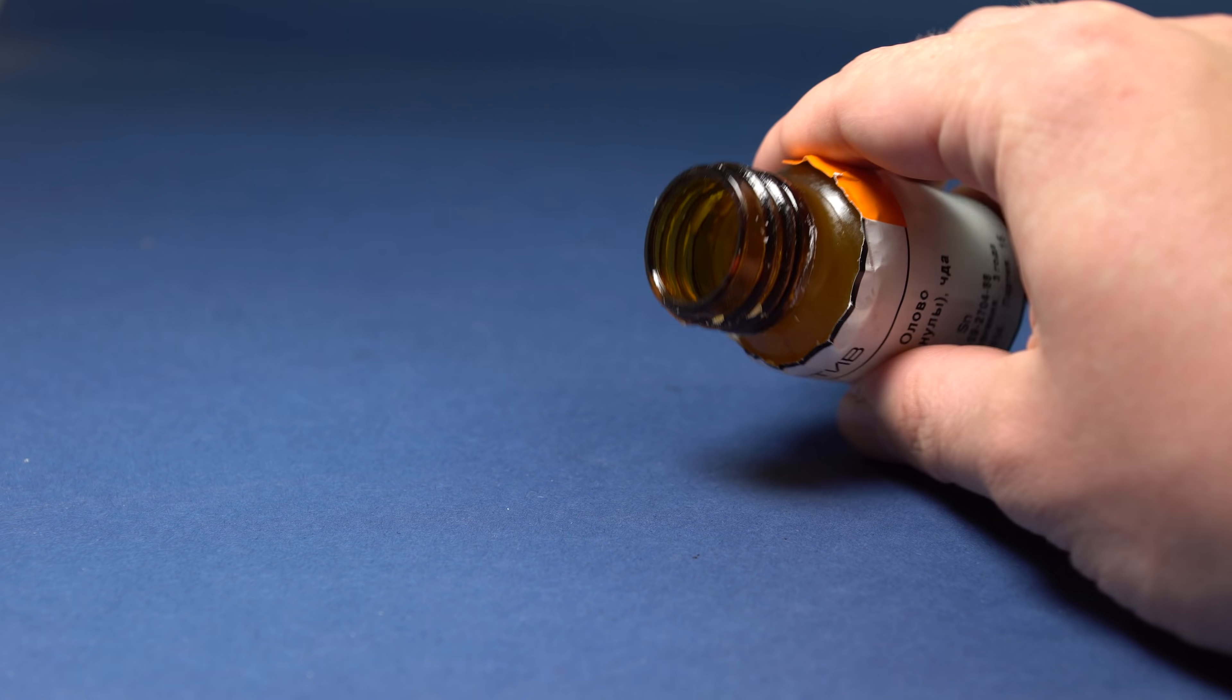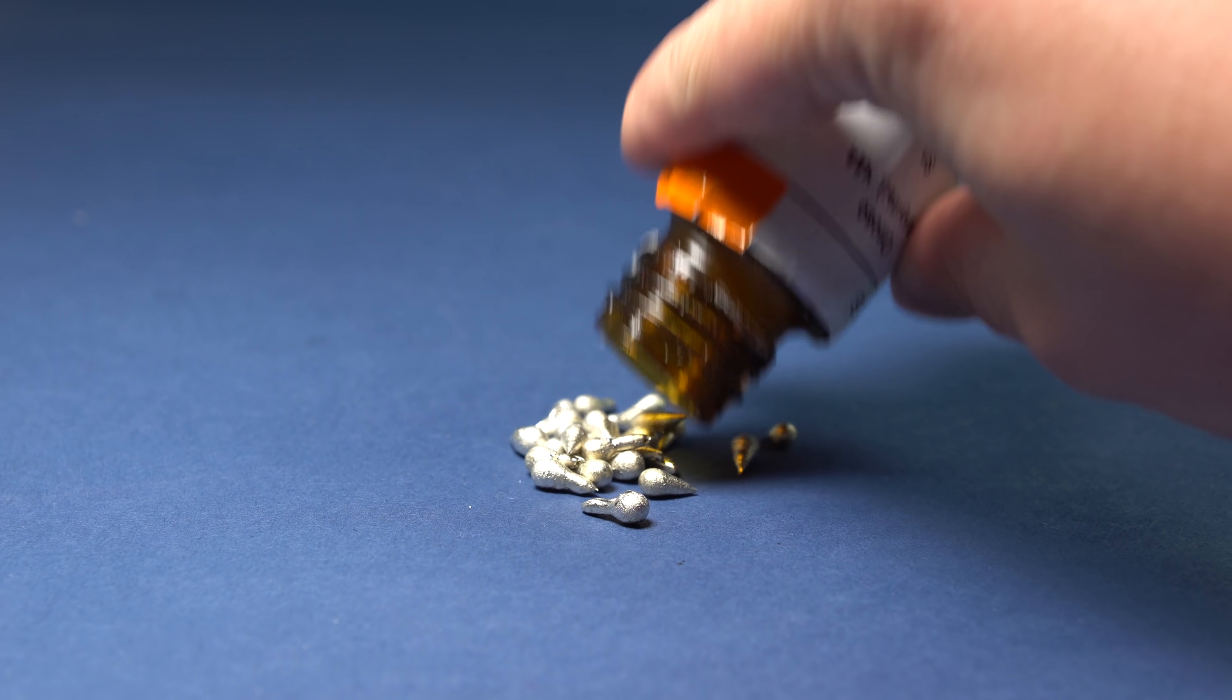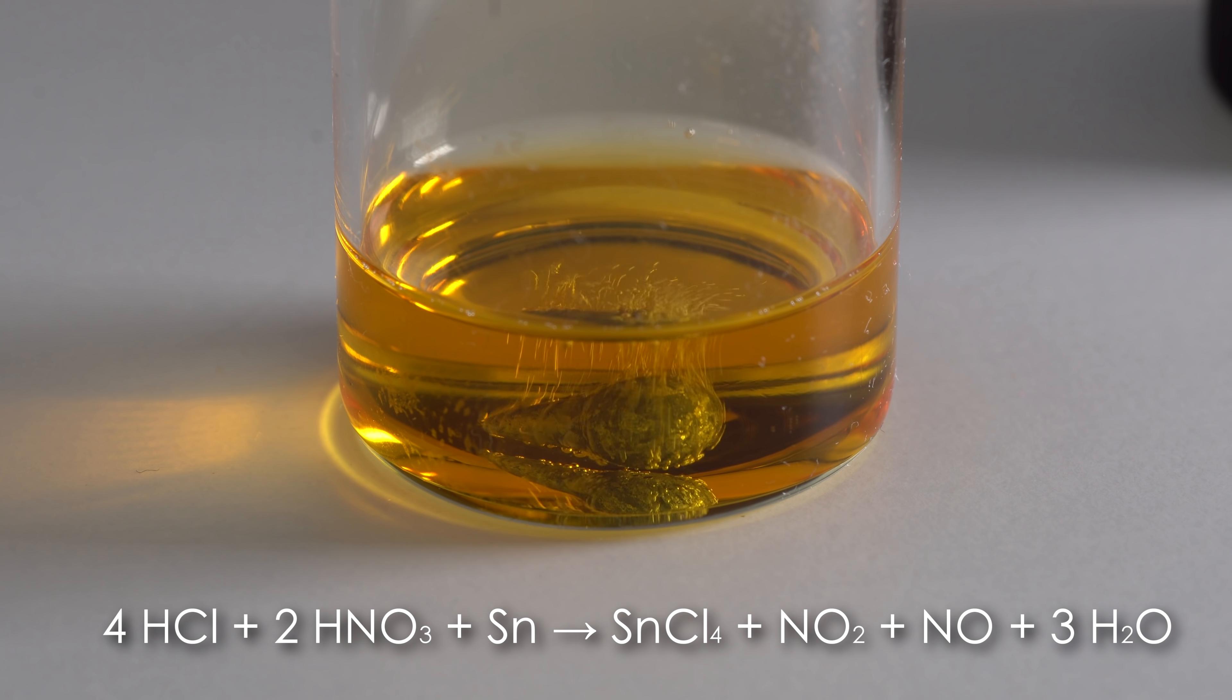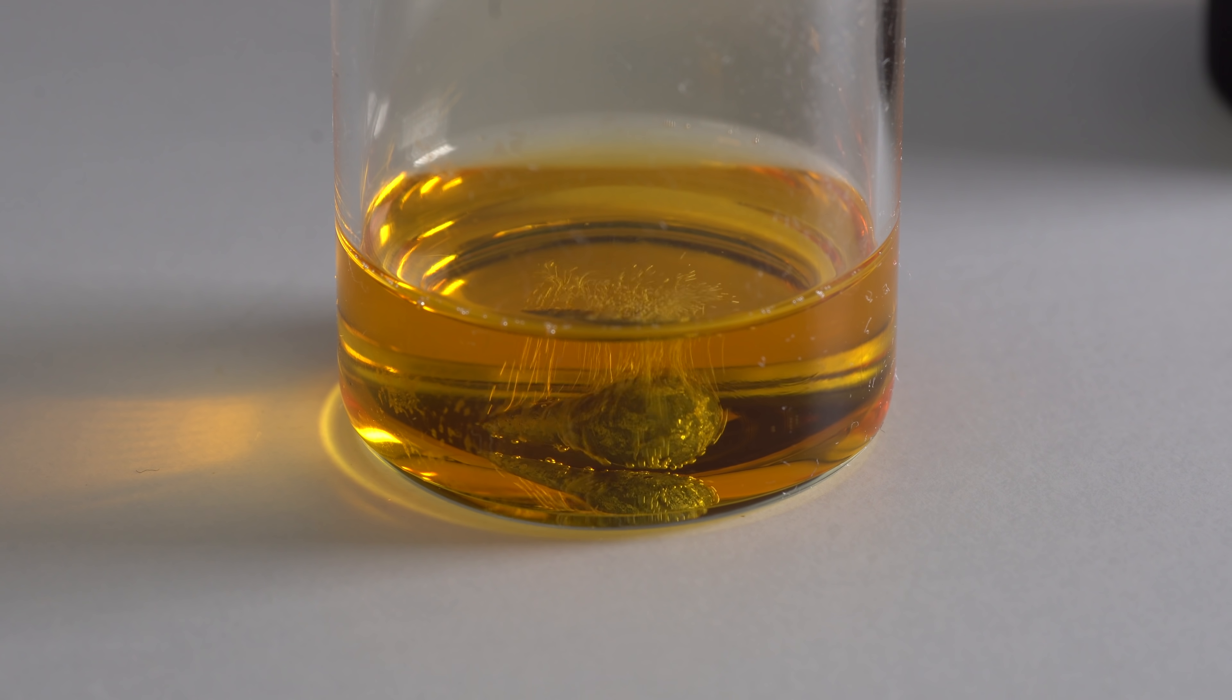From the chemical point of view, tin is a low-activity metal that reacts poorly with dilute acids. But when reacting with aqua regia, tin begins to dissolve actively, oxidizing to tin tetrachloride, which is used, for example, in the production of soap.